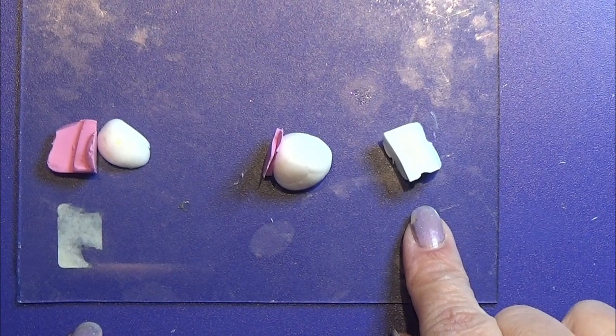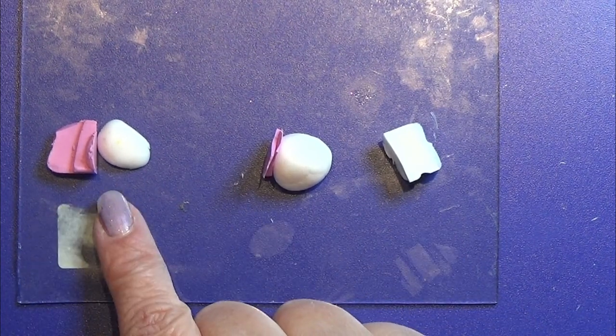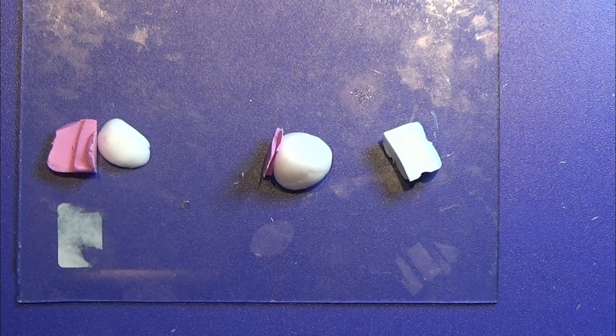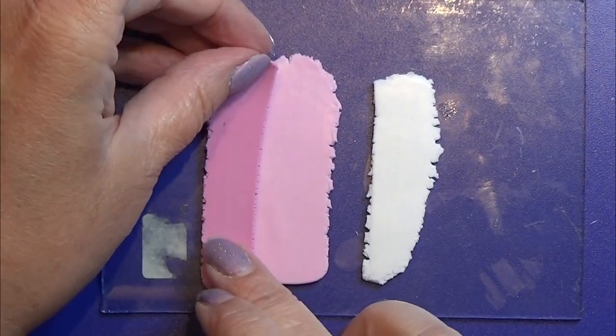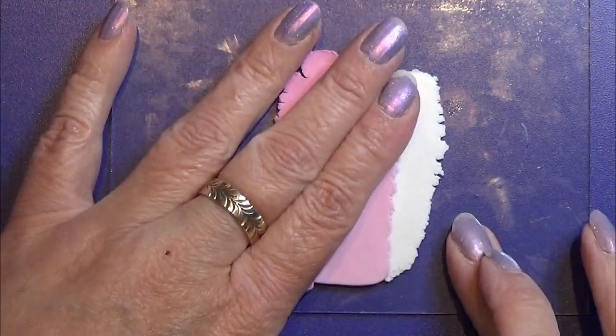I'm going to use a clump of translucent clay, a translucent and a tiny bit of pink, and a lot of pink with a tiny bit of translucent. That gives these three colors that I'm going to make a blend, a Skinner blend of.